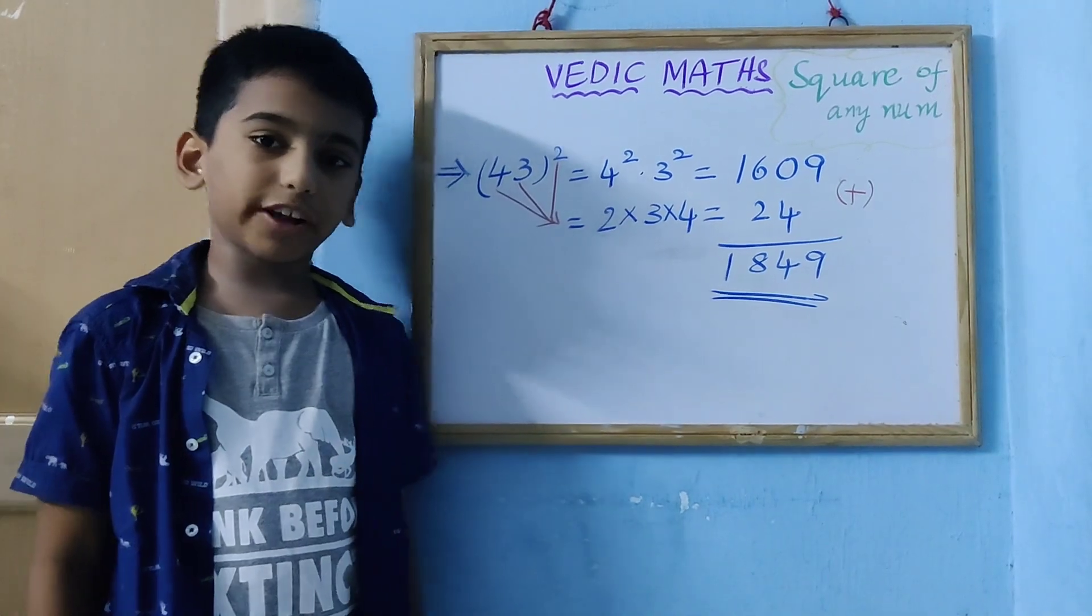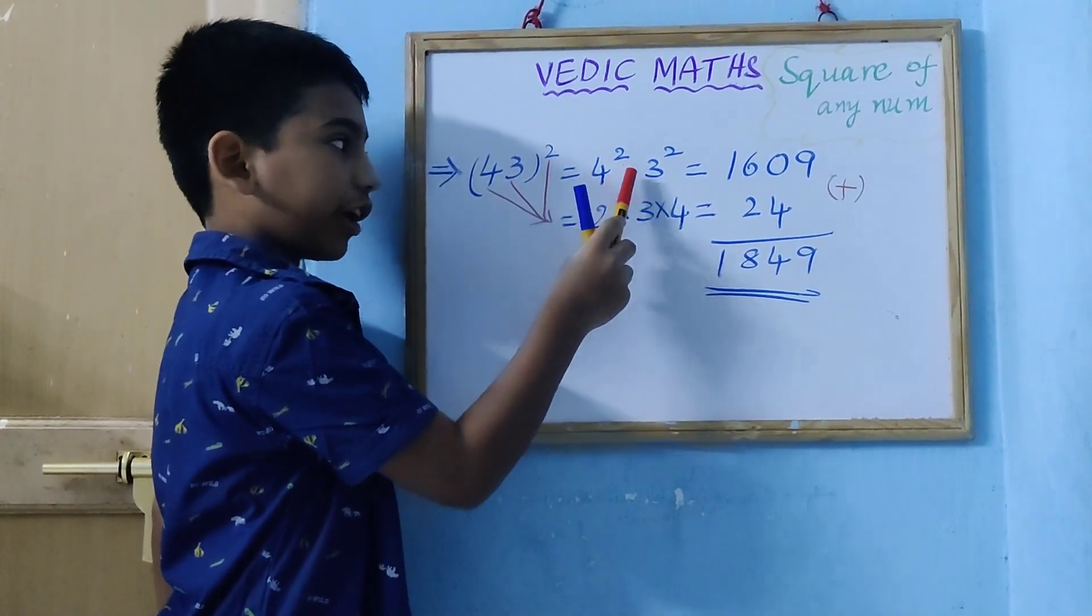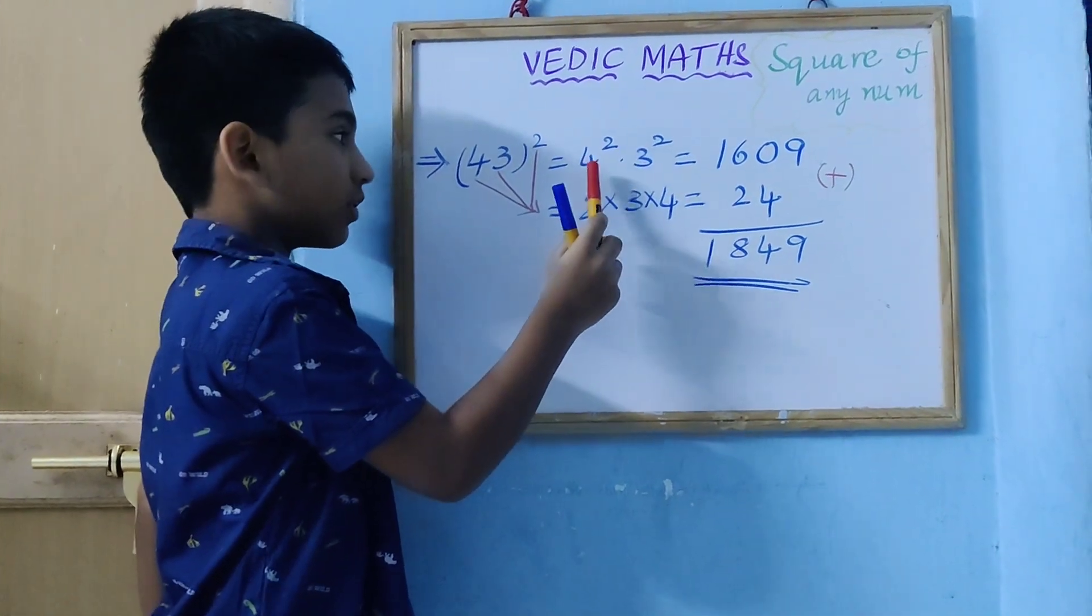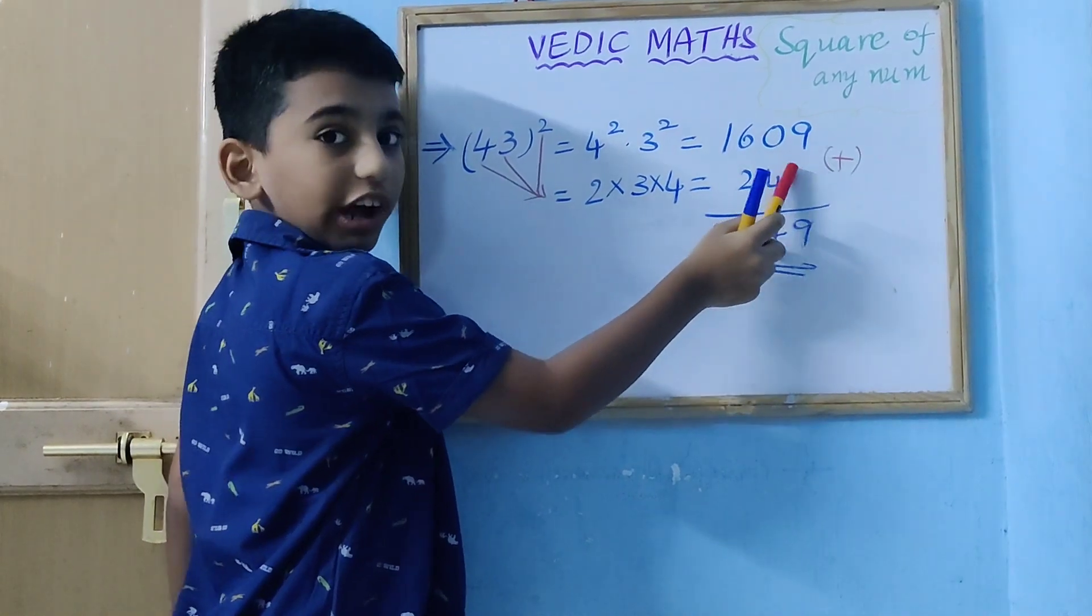Now, moving to the next square. 43 square equal to 4 square and 3 square. 4 times 4 are 16, 3 times 3 are 9. We have to write 09.